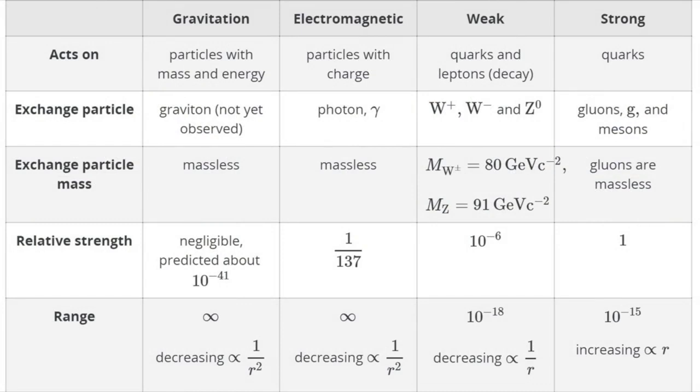Its range is shorter even than that of the strong force, and the reason for this is that its carrier particles, the W and Z bosons, are very massive, between 80 and 90 billion electron volts.